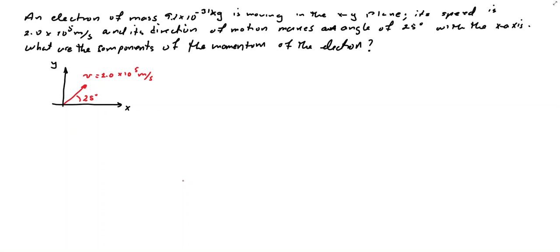In the first problem, they say that an electric ground of mass 9.1 times 10 to the negative 31 kilograms is moving in the xy plane. Its speed is 2.0 times 10 to the fifth meters per second and its direction of motion makes an angle of 25 degrees with the x-axis. They ask: what are the components of the momentum of the electron?